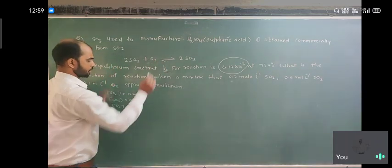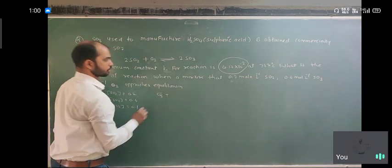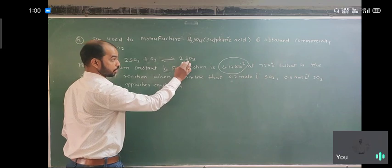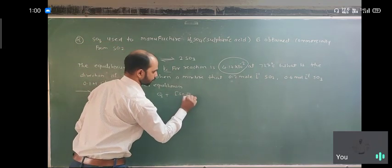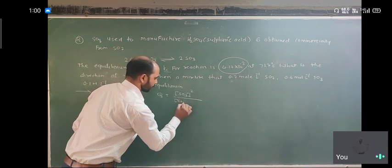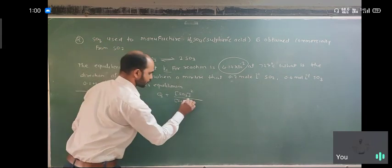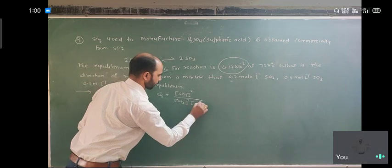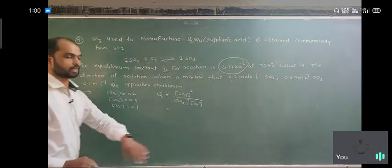We have this equation. Using this equation, Q is equal to product of products with power. So here SO3, concentration of SO3 with power 2, upon there is a reactant side, there is SO2, the power is 2, into O2. So we put the concentration values here.